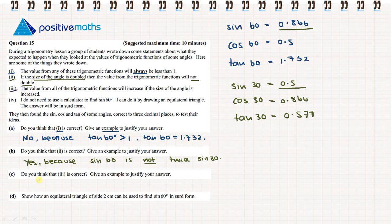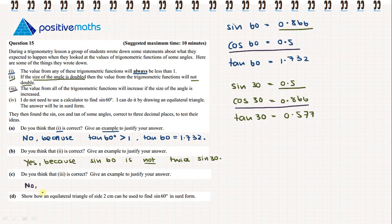Part C: do we think statement 3 is correct? Again, give an example to justify your answer. Statement 3 says: the value from all trig functions will increase if the size of the angle is increased. We can use the cosine of 30 degrees and the cosine of 60 degrees. The cosine of 30 is 0.866 and the cosine of 60 is 0.5. The angle has increased, but the value of the trig function has not increased. So we say no, because the cosine of 30 degrees is greater than the cosine of 60 degrees.